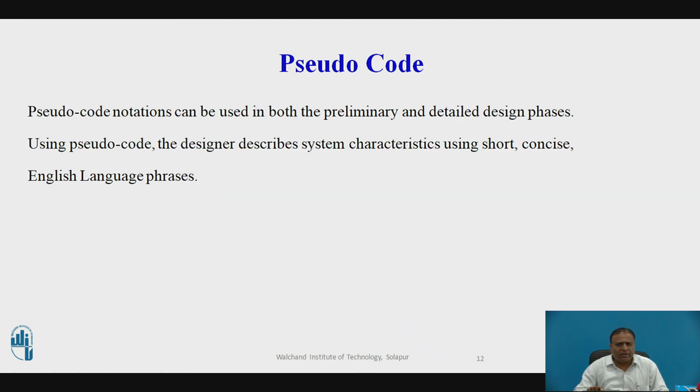The next part is pseudocode. Pseudocode notations can be used in both the preliminary and detailed design phases. Using the pseudocode, the designer describes the system characteristics using short, concise English language phrases that are structured by keywords such as if, then, else, while, do, and end. Pseudocode is system description in short English phrases describing the function. It uses keywords and indentation. Pseudocodes are used as replacement of flowcharts. It decreases the amount of documentation required.